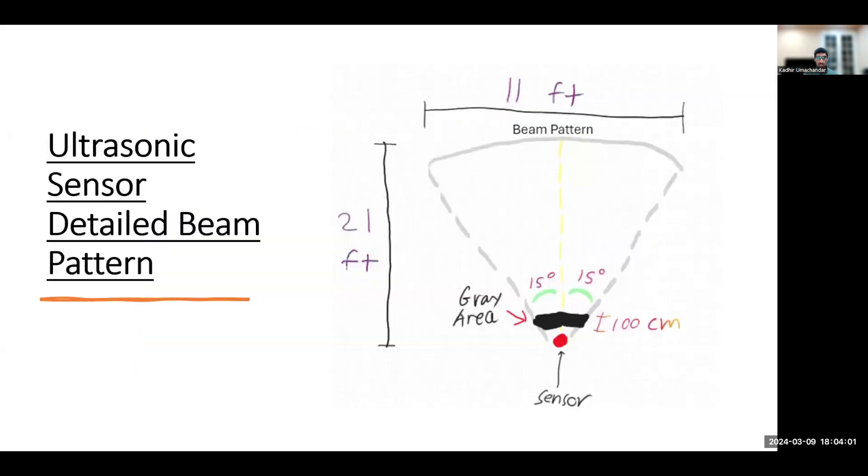Here's a detailed beam pattern on my ultrasonic sensor. So this is the max vertical range of 21 feet and this is the max horizontal range of 11 feet. And this is the angle of attack 15 degrees. And I also discovered that there's a gray area from 0 to 100 centimeters where the sensor can't effectively detect anything.